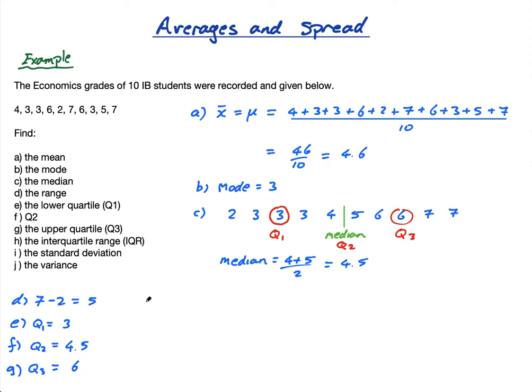Part H, the interquartile range, IQR. It's the range between the quartiles. It's Q3 minus Q1. What's Q3 minus Q1? 6 minus 3, which is 3. That's the interquartile range.